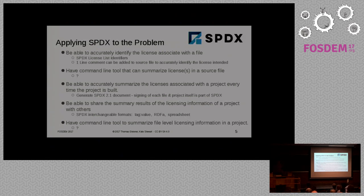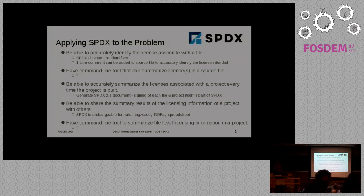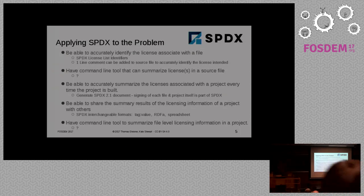SPDX was started to address parts of this. At the time, it was focused mostly on getting a standard together so we could accurately identify the licenses associated with each file. The SPDX license list has 300 licenses with standard identifiers, and you can put a one-line comment into each file and identify it without too much pain from a developer perspective. If you can generate an SPDX 2.1 document for each build of a project — with signing of the files and the project itself — you have all the information to know things have changed from revision to revision.